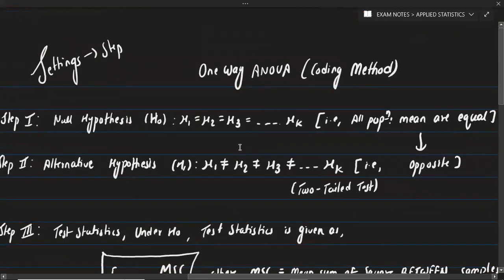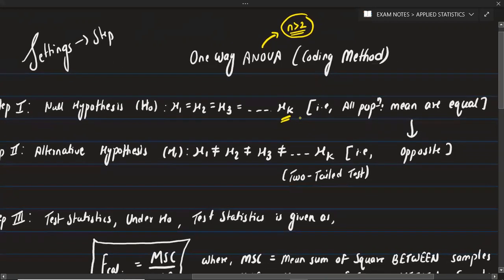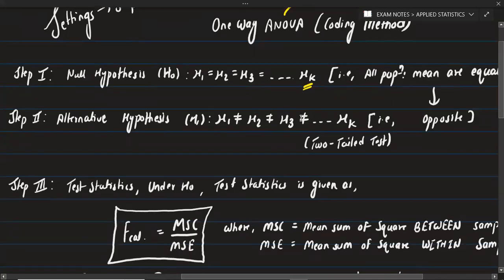Generally, the ANOVA test is used when the sample size is greater than two. The null hypothesis states that all population means are equal: mu1 = mu2 = mu3 = ... = muk. If the question asks whether there is a significant difference, we can write the null hypothesis as: all population means are equal.